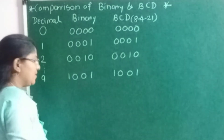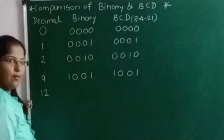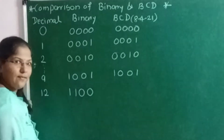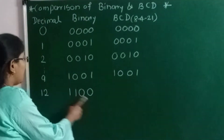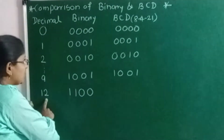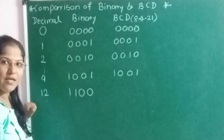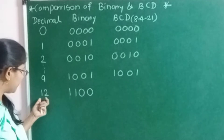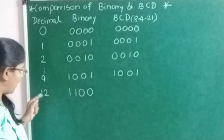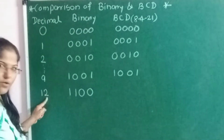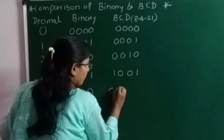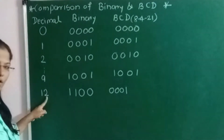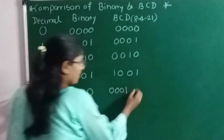Now let me take one more example. Suppose I want to represent 12 in binary. The binary representation is 1100, because 8 plus 4 equals 12 — the weighted values 8 and 4 are selected. This is the binary equivalent for decimal 12. To represent 12 in BCD, we write the BCD equivalent for each digit separately. There are 2 digits: 1 and 2. So the BCD equivalent for 1 is 0001, and the BCD equivalent for 2 is 0010.